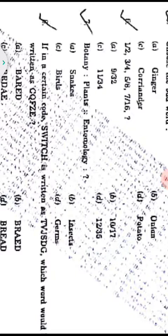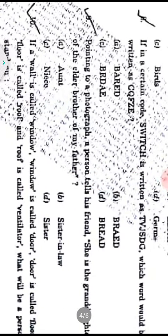Question seven analogy: Botany is the subject related to plants; in the same way, entomology is the subject related to insects. So option B is the correct answer. Question eight: In a certain code language, 'switch' is written as 'tvjsdg' — which word would be written as 'cqfze'?